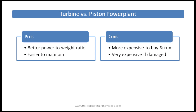Comparing turbine power plants to piston power plants, there are pros and cons. Turbine engines provide a better power-to-weight ratio and they're easier to maintain. On the negative side, they're more expensive to buy and run, and if they're damaged it can be very expensive.